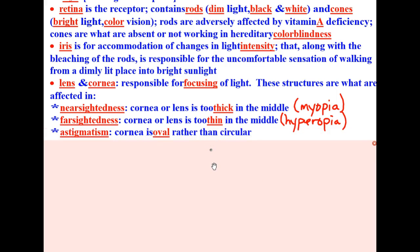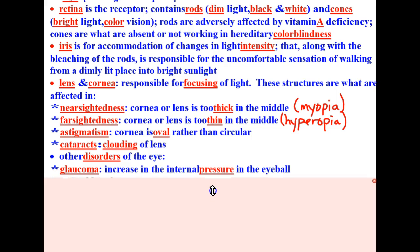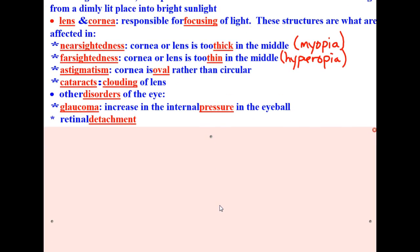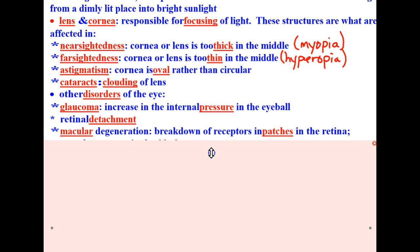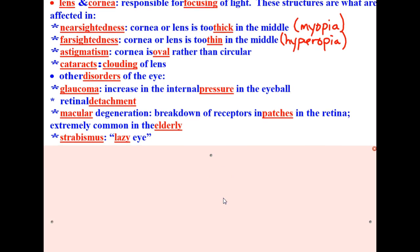Astigmatism is when the cornea is oval rather than circular. Cataracts are when the lens is clouded. Other disorders of the eye include glaucoma, which is an increase in internal pressure in the eyeball. Retinal detachment, if this happened you would lose your sight altogether in the eye. Macular degeneration, which is a breakdown of receptors in patches of the retina and is extremely common in the elderly. And then strabismus is the technical name for what is called lazy eye.